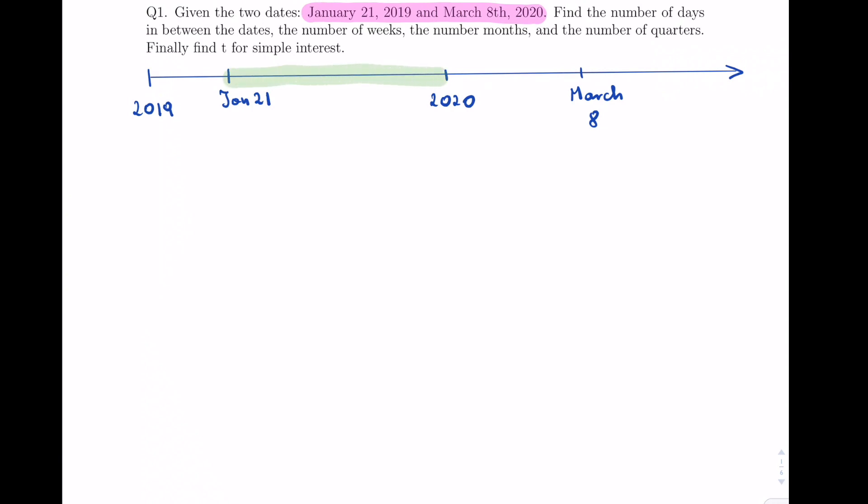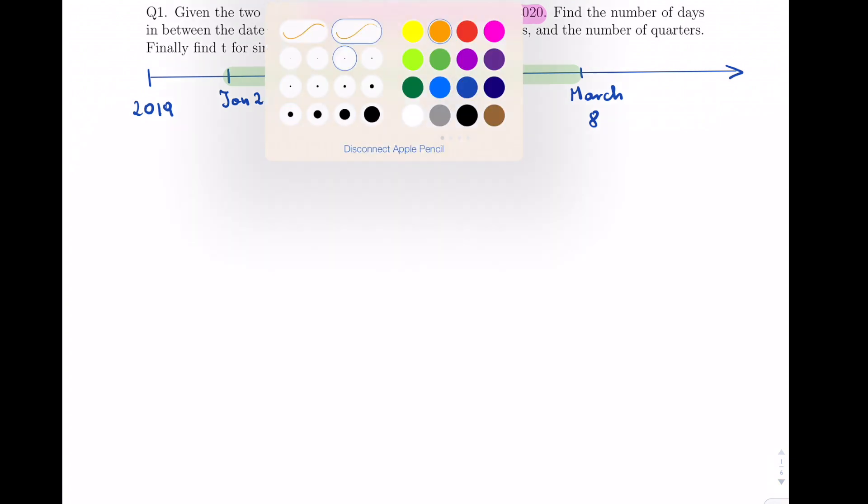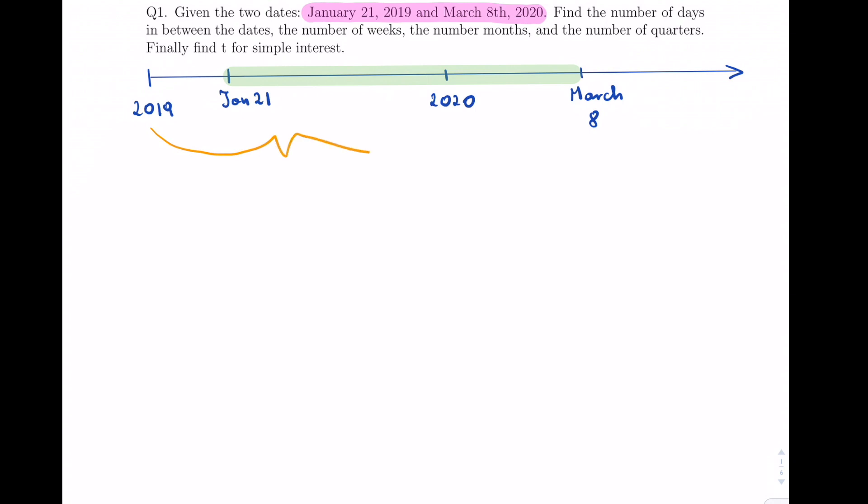The easiest thing would be to take out a business calculator and simply find out how many days in between. Instead of doing that, I'm going to do it the long way just so that everyone can see what happens. In 2019, we have 365 days because it's not a leap year.